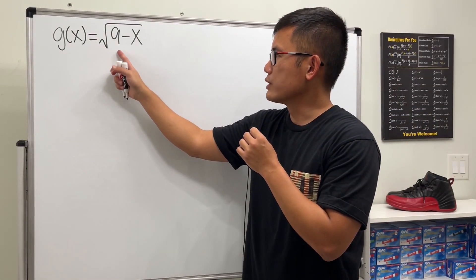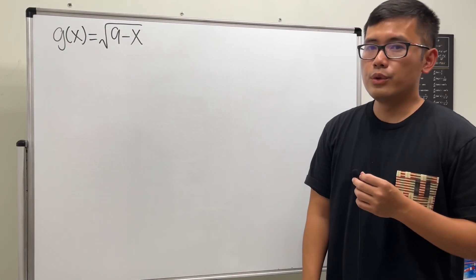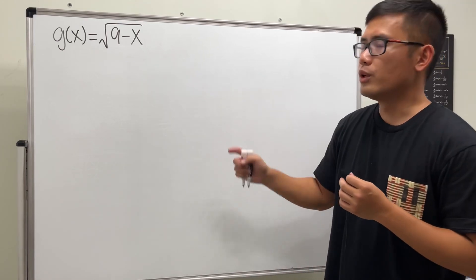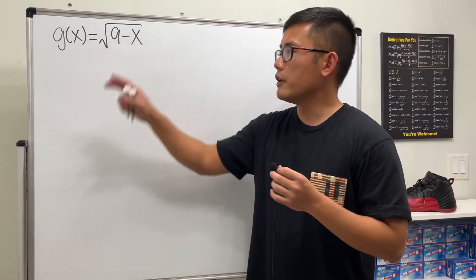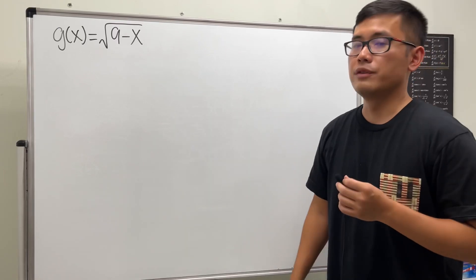We have the function g of x is equal to the square root of 9 minus x. We are going to use the definition of derivative to find the derivative, and then we'll find the domains of the function and also its derivative.